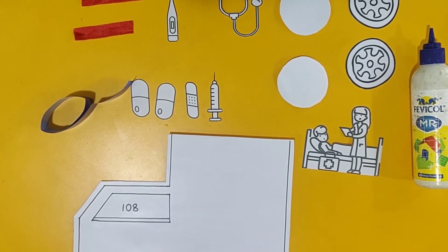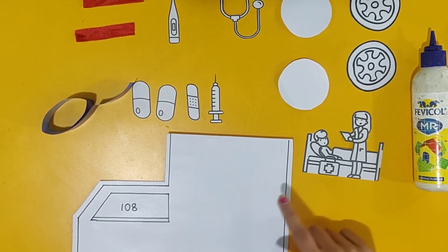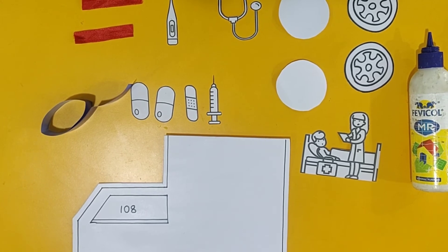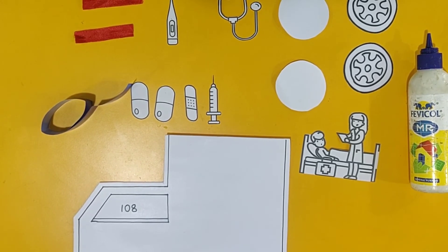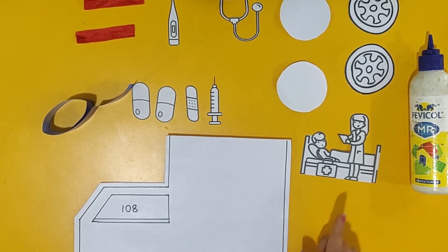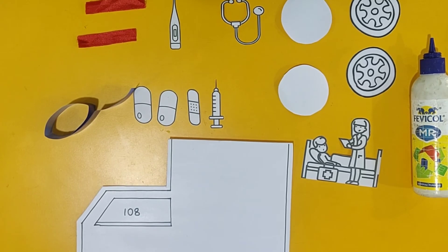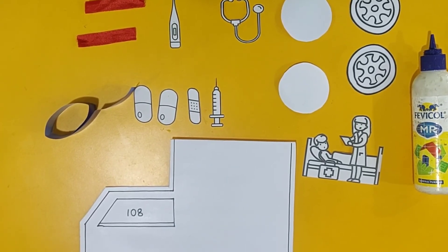Kids, today we are going to make an ambulance that is used when a patient has to travel to the hospital. Kids, whenever you see an ambulance on the road with the siren on, you should always give them way because the patient has to reach the hospital as soon as possible. So, let us make the ambulance craft activity.